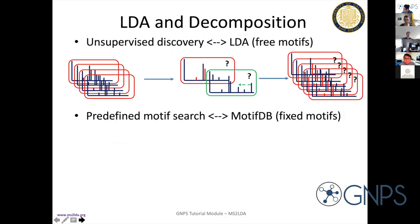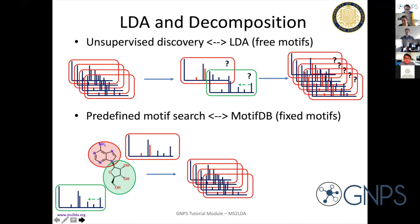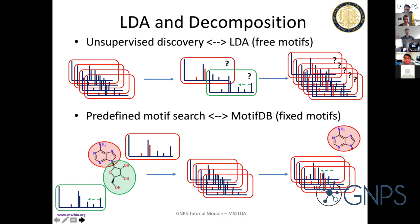Traditionally, in the beginning we only did unsupervised discovery using LDA — the LDA would learn from the data which master motives were there, and then it's up to the user to annotate them with a chemical or substructure annotation. However, we have started to build some motif sets in MotifDB. You can use them as a predefined motif set and add them into the mix — the model doesn't need to learn them, it will take them and try to find them in your data. This is much quicker, but it won't find any novel chemistry in your data. That's the difference between free motives and predefined motif sets from MotifDB.